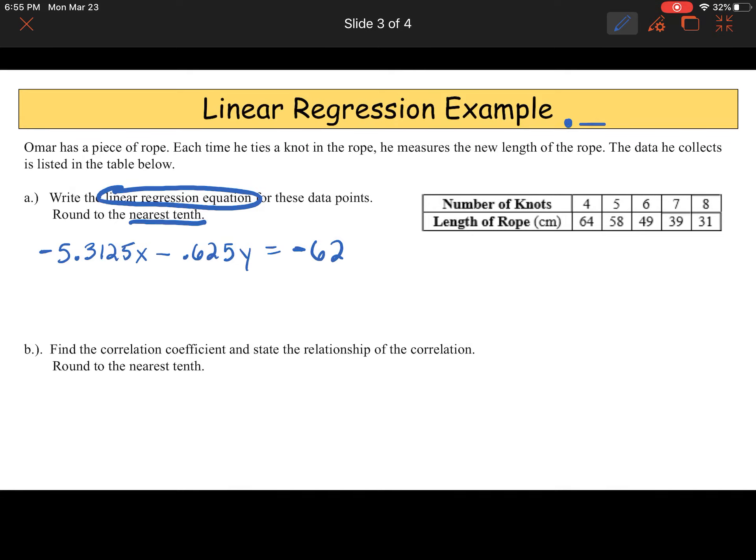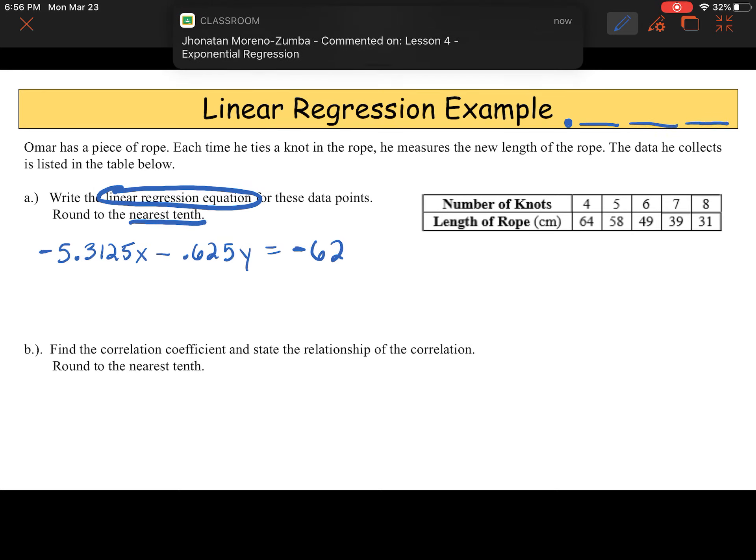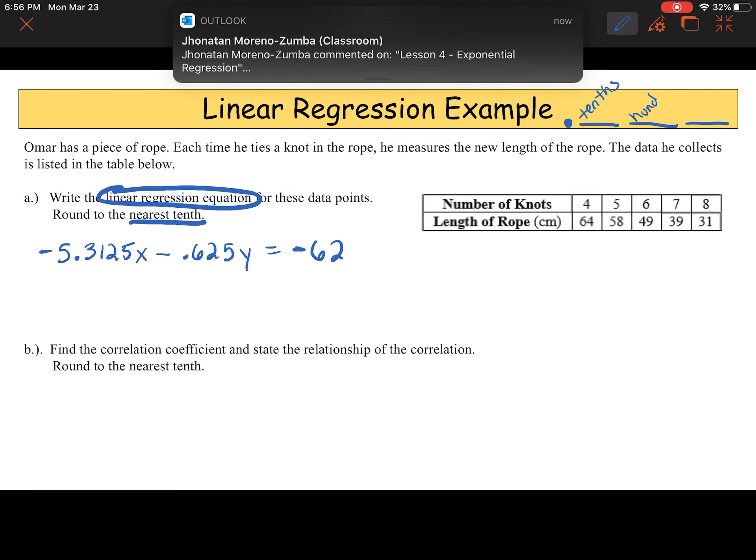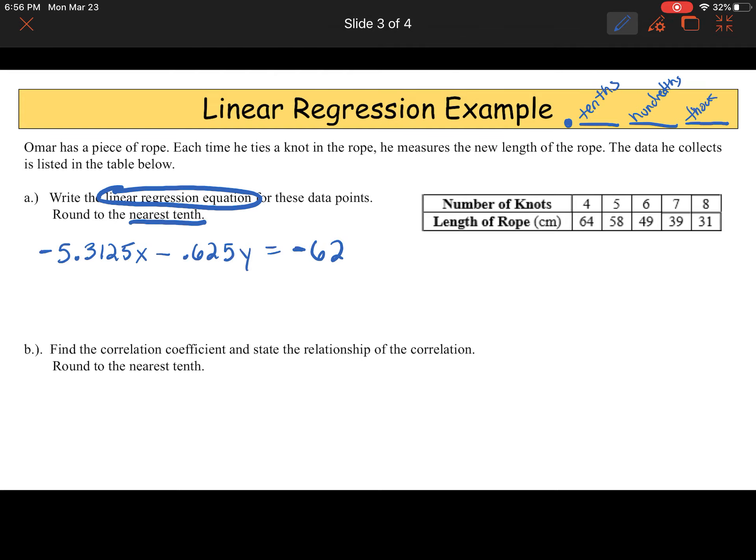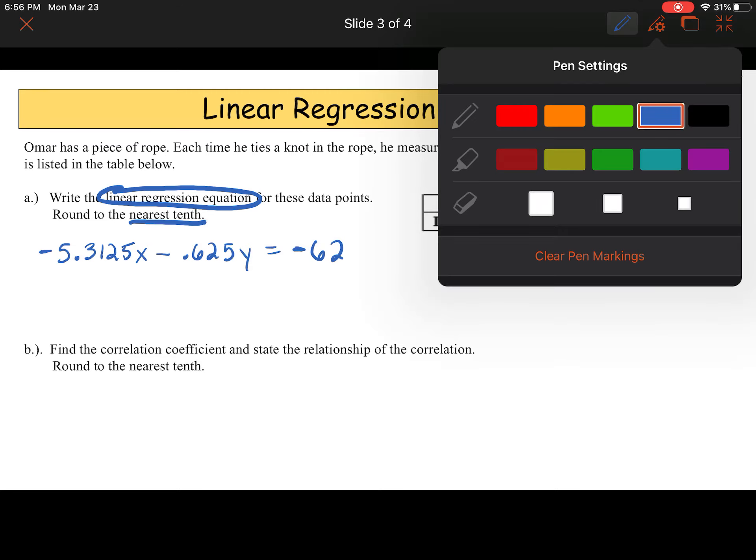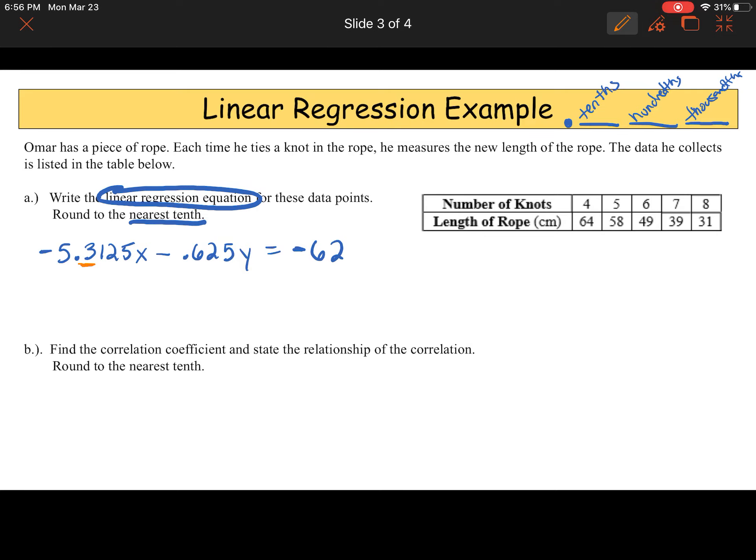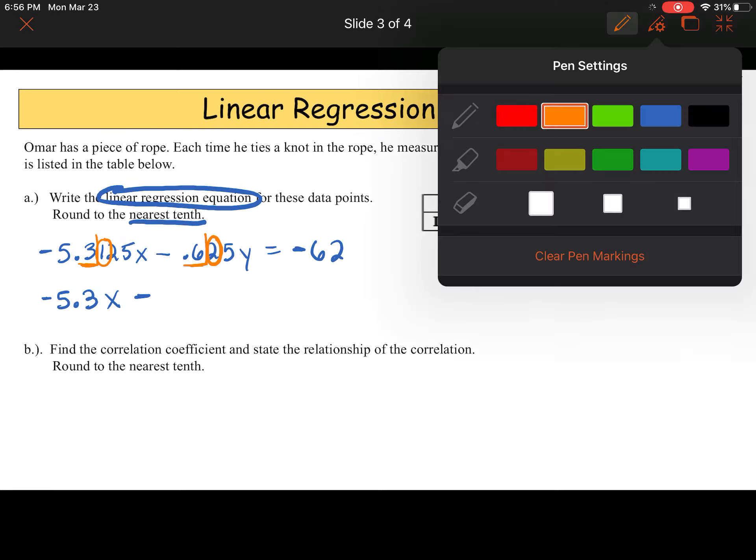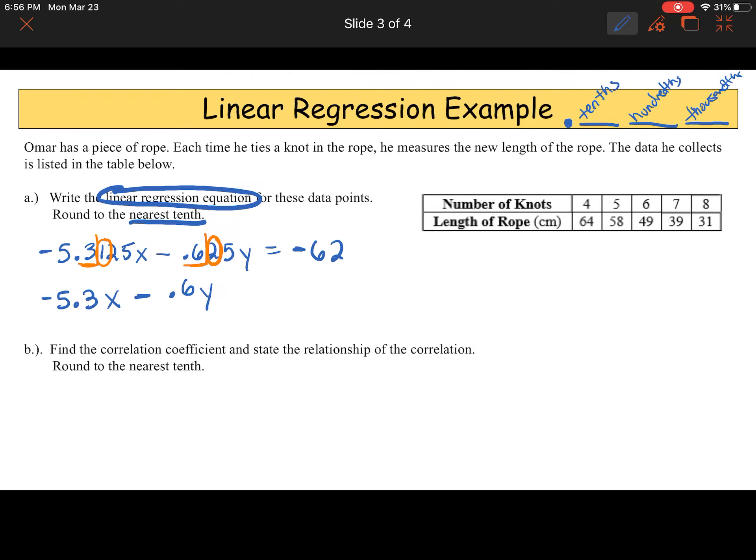And it wants it to the nearest tenth. Remember, the tenth place. If our decimal is here, I have the tenth, the hundredths, the thousandths. So I'm going to go to the nearest decimal place, which is my first decimal place, the tenths. And I'm going to ask myself, five or above? Give this three a shove? Nope, one is not greater than five, so we leave it alone. So I have negative 5.3x minus, here's the nearest tenth place. So I ask myself, five or above, is that two, five, or above? No, it's not, so we don't give six a shove, we leave it alone. Equals negative 62. 62 does not have a decimal, so we leave it alone. This is my answer. This is my linear regression equation.